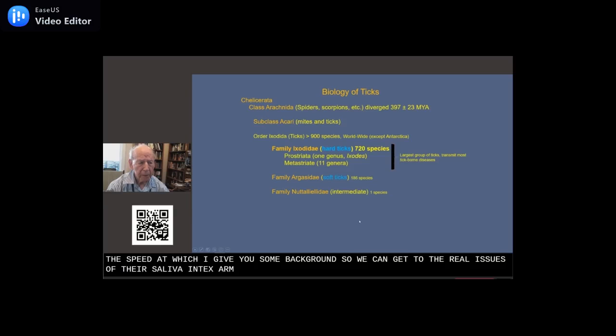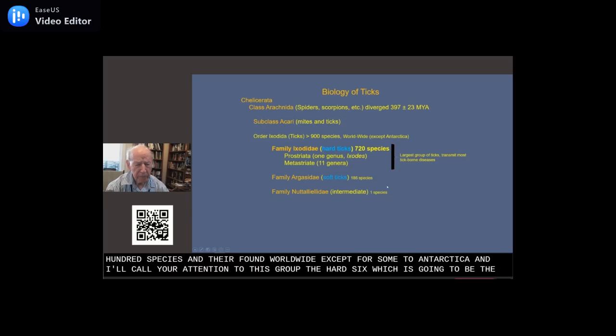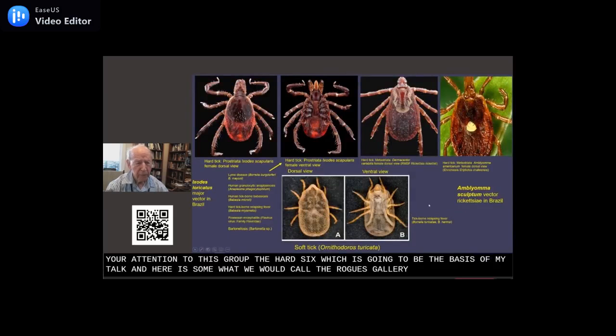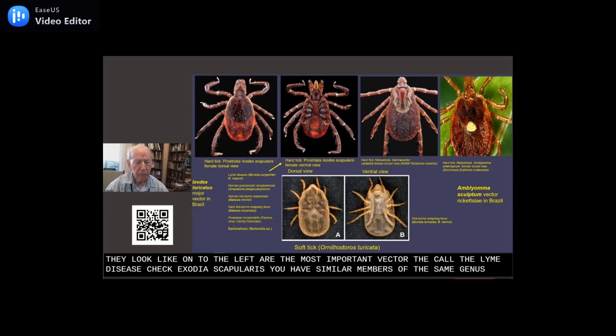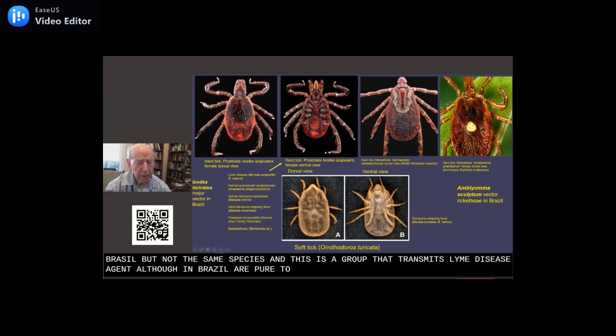Ticks are in the chelicerate group, the members of the class Arachnida, like spiders and scorpions. They're a large group, over 900 species, found worldwide except Antarctica. I want to call your attention to this group, the hard ticks, which is going to be the basis of my talk. Here is a rogues gallery of bad actors. To the left are the most important vectors, the Lyme disease tick, Ixodes scapularis. You have similar members of the same genus in Brazil, but not the same species.